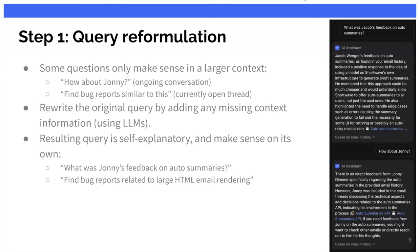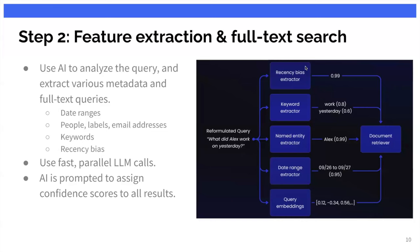This is where query reformulation comes in — another application of an LLM where we take the conversation history and also other context like what thread the user is currently looking at, and rewrite the user's question to be self-contained and sensible. So "How about Johnny?" gets rewritten to something like "What was Johnny's feedback on auto summaries?" — a question we can send to the retrieval pipeline to pull in relevant context.